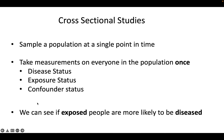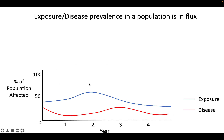Then we can basically see if those who are exposed are more likely to also be diseased, and if we're interested in confounders we can control for that when trying to figure out if these are related. A potential problem is that the amount of exposure and disease in a population is in flux over time.